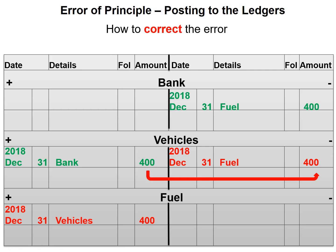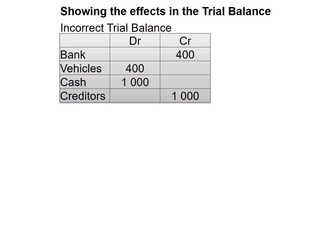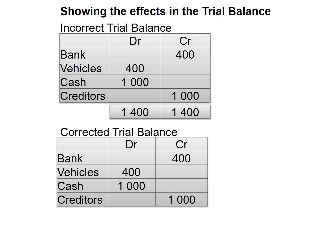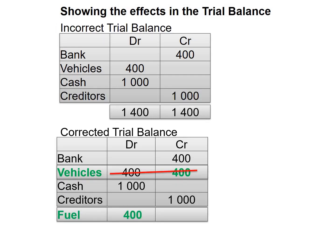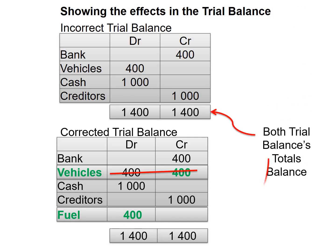In our incorrect trial balance, we see a debit balance for vehicles, which should not be there, because the money was used for fuel and not for vehicles — but the trial balance still balances. In the correct trial balance, we credit the vehicles account with $400.00, bringing it to zero, and then debit the fuel account with $400.00. After correcting the error, the trial balance still balances.